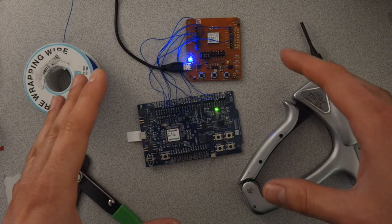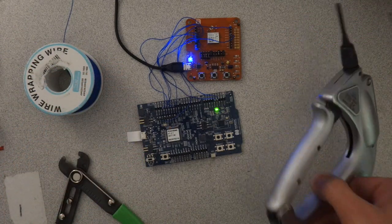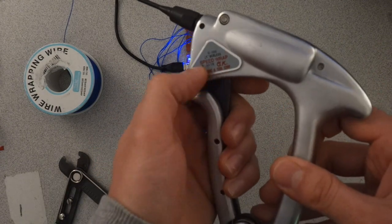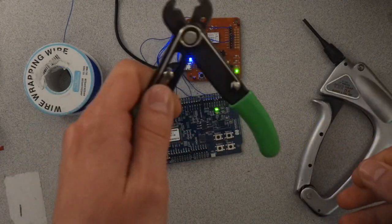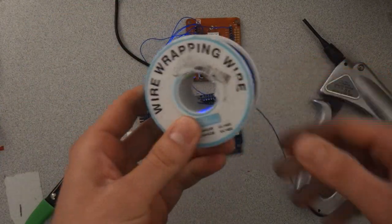The process to make these connections is relatively simple. I'm going to use an old OK Machine Tool Corp Speedwrap gun here. I'm going to use my strippers, my handy strippers, and I'm going to be using this 30 gauge wire wrapping wire.